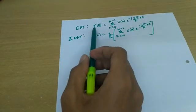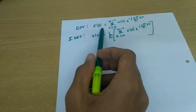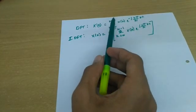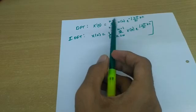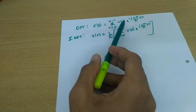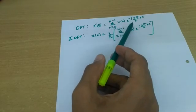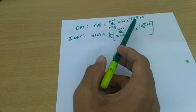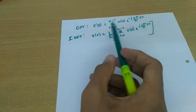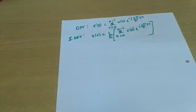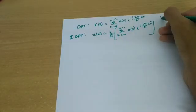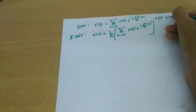The DFT is denoted by X of k. X of k is given by the summation from n equals 0 to N minus 1 of x(n) e raised to minus j 2 pi by N times k times n, where k ranges from 0 to N minus 1.